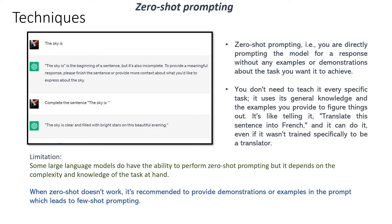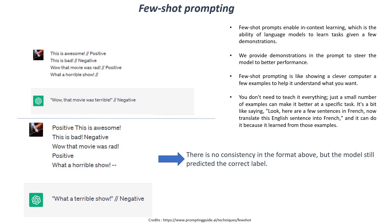In zero-shot you are not providing any demonstrations. Few-shot prompts enable in-context learning, which is the ability of language models to learn tasks given a few demonstrations. We provide demonstrations in the prompt to steer the model to better performance. For example: 'This is awesome.' — I say that is positive. 'This is bad.' — I say it is negative. So I demonstrate. Now when I throw the question 'Wow, that movie was terrible,' it answers negative — because I have fed in the examples that way, and it can understand from the references and demonstrations given. This is called few-shot prompting.